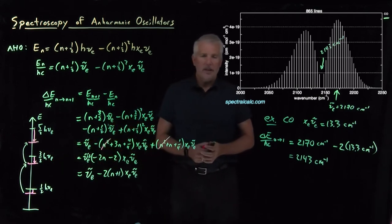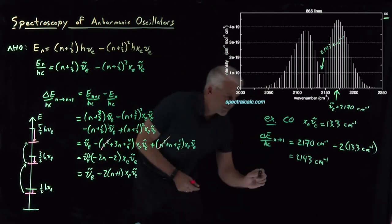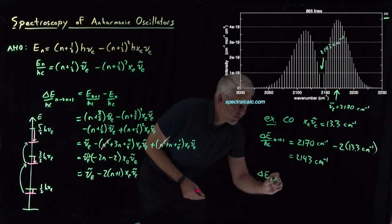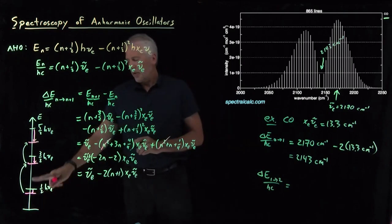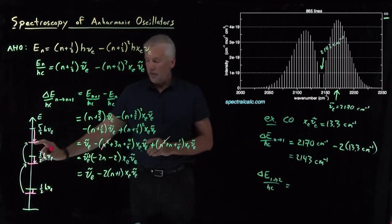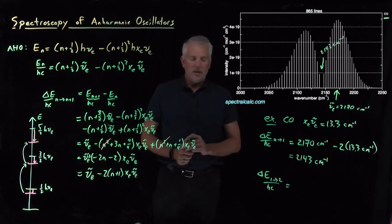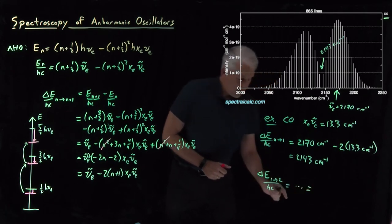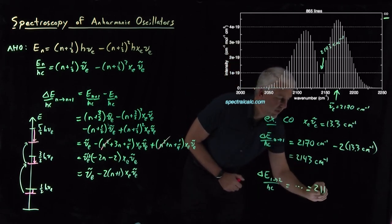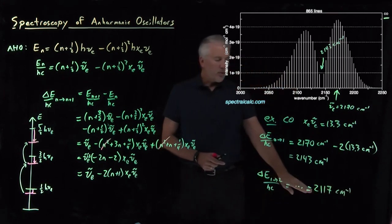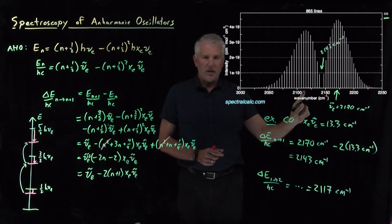The cause of this redshift in the absorption spectrum is the anharmonicity — the decrease in energy levels due to anharmonicity causes the spectrum to be redshifted. This also helps explain another mystery. For the one-to-two transition — going from n equals one to n equals two rather than n equals zero to n equals one — we expect it to be redshifted a little further because n is larger. Repeating the calculation gives a value of 2117 wavenumbers, so we'd expect the same sort of spectrum but centered around 2117 wavenumbers.